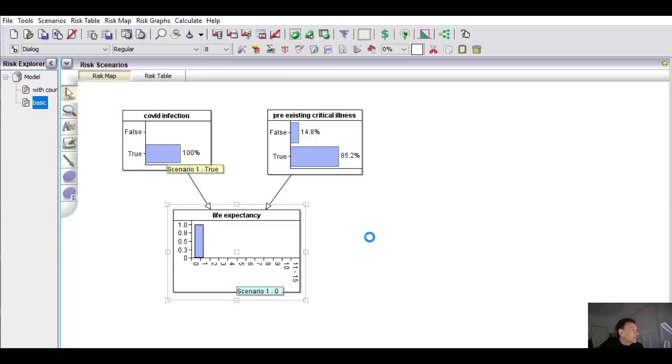so the life expectancy becomes zero, then through Bayesian inference, we get the revised probability for pre-existing critical illness. Now we've got to use this new information about the probability that Fred has pre-existing critical illness in a counterfactual